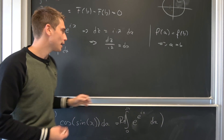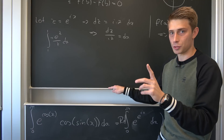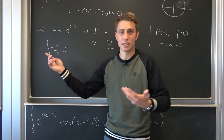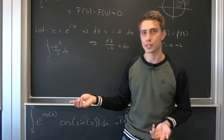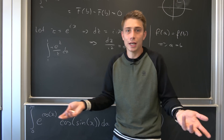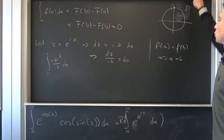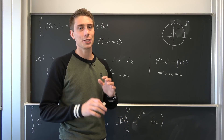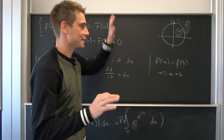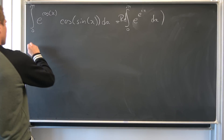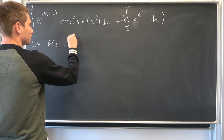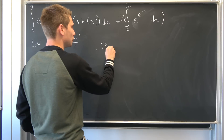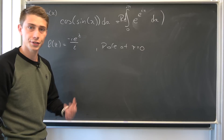So let f of z equal negative i times e to the z over z. We have a singularity — a simple pole — at z equals zero. The contour integral of this function equals two pi times i times the sum of the residues of f of z. The residue at z equals zero for a simple pole is the limit as z approaches zero of z times f of z, which is z times negative i e to the z over z. The z cancels, and taking the limit gives negative i.